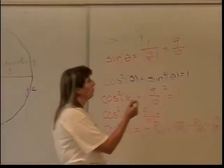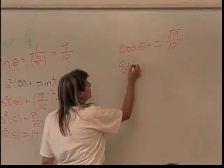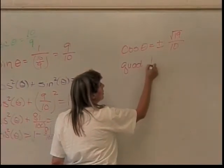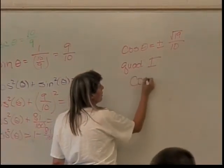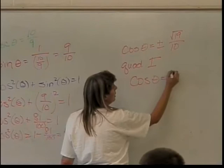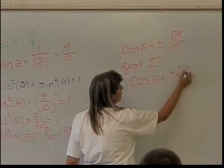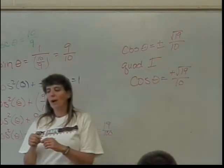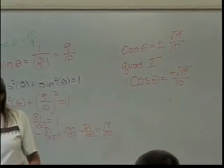So, I'm in quadrant 1. My cosine of theta turns out to be the positive square root of 19 over 10. Now, the rest of the question should be really easy.